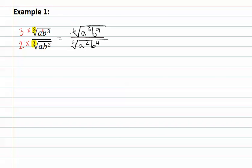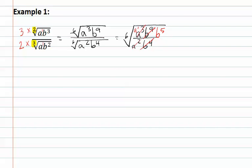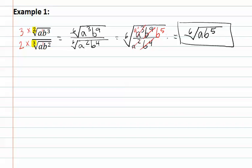Now that we have the same index in both the numerator and the denominator, we can combine it into one large radical: a to the 3rd, b to the 9th, over a squared, b to the 4th. We can now reduce the fraction inside the radical. We have a to the 3rd over a squared — there are more a's in the numerator by 1. The b's reduce with more b's in the numerator by 5. The denominator is completely gone, and now we have the 6th root of a to the 1st (or just a), b to the 5th. There is no radical in the denominator, so we do not have to rationalize, and none of the exponents are large enough to bring out of the radical — we would need 6 or more.